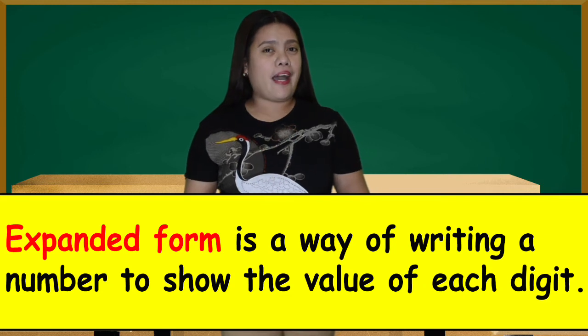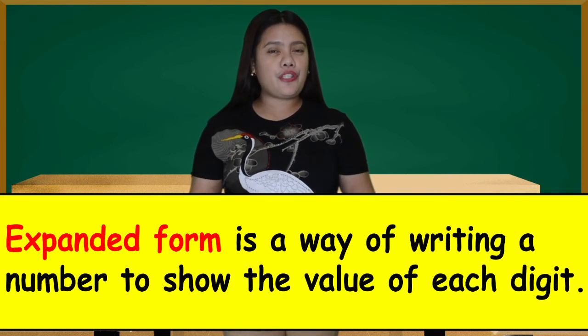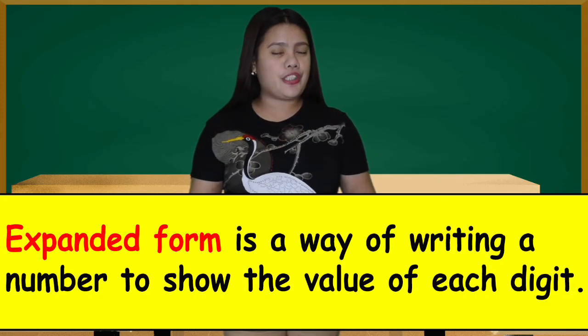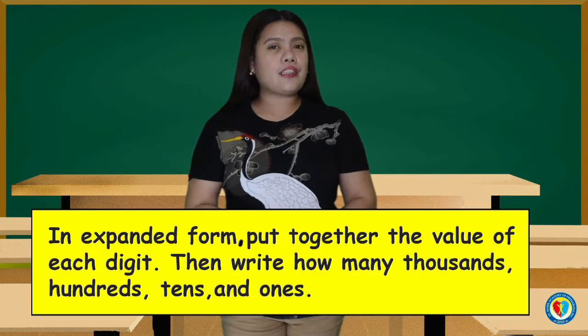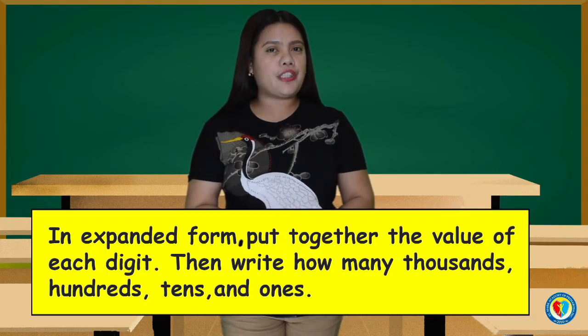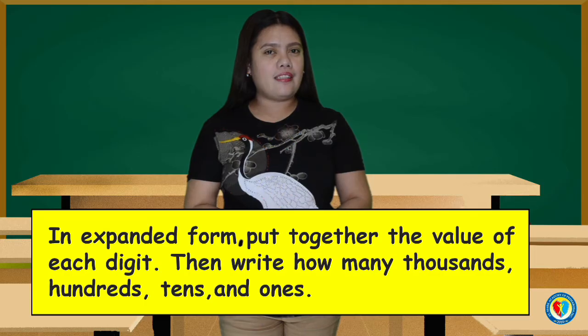Let's define first what is expanded form. Expanded form is a way of writing a number to show the value of each digit. In expanded form, put together the value of each digit then write how many thousands, hundreds, tens, and ones.